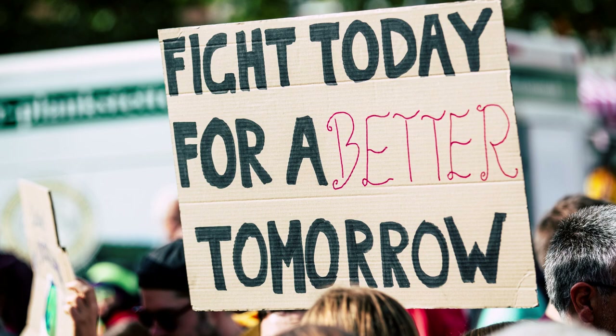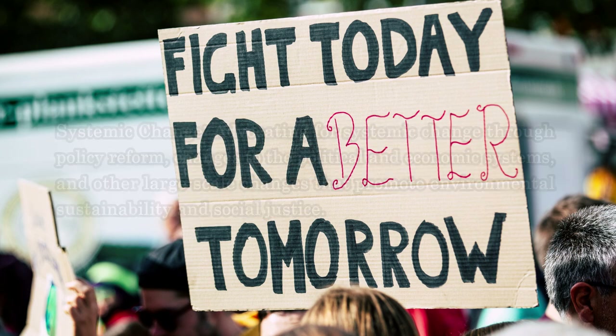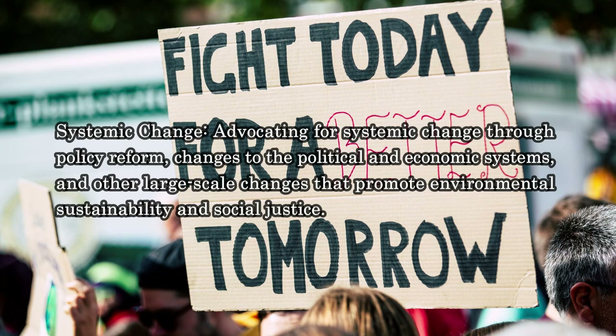Creating alternative models: encouraging experimentation with new and alternative models of political and environmental governance, such as community-led initiatives, cooperatives, and local sustainability initiatives. Systemic change: advocating for systemic change through policy reform, changes to the political and economic systems, and other large-scale changes that promote environmental sustainability and social justice.